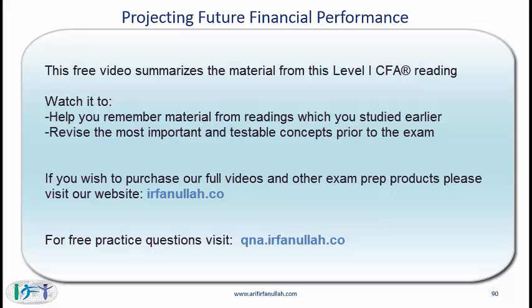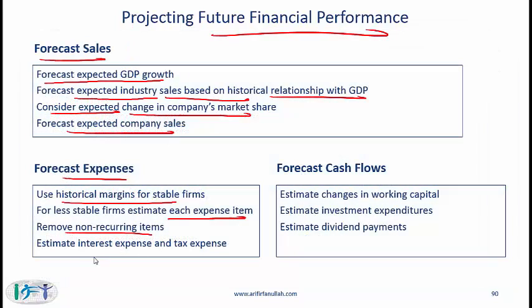Then you forecast expenses. Use historical margins for stable firms; for less stable firms, estimate each expense item. Remove any non-recurring items and estimate interest expense and tax expense separately, because they are generally not a function of sales. Interest expense will be a function of debt, and tax expense you calculate after figuring out your profit before tax.